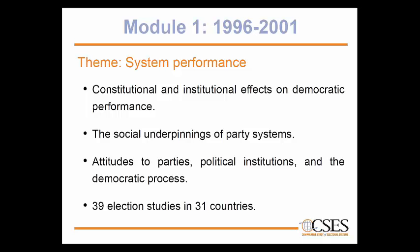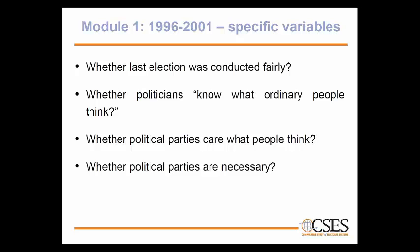The first module was in the field between 1996 and 2001, with the central theme of system performance. It was designed for research on constitutional and institutional effects on democratic performance, the social underpinnings of party systems, and attitudes towards parties, political institutions, and the democratic process. Module 1 had 39 election studies across 31 countries. Variables included whether respondents thought the last elections were conducted fairly, legitimacy of politicians and parties — for example: 'Do politicians know what ordinary people think?' and 'Are political parties necessary?'